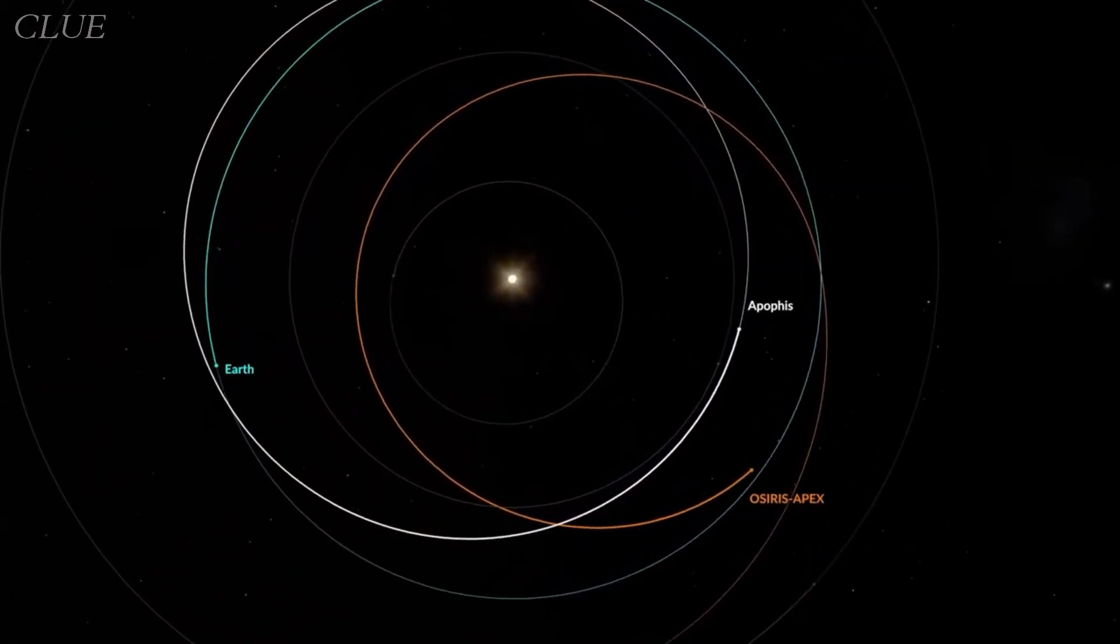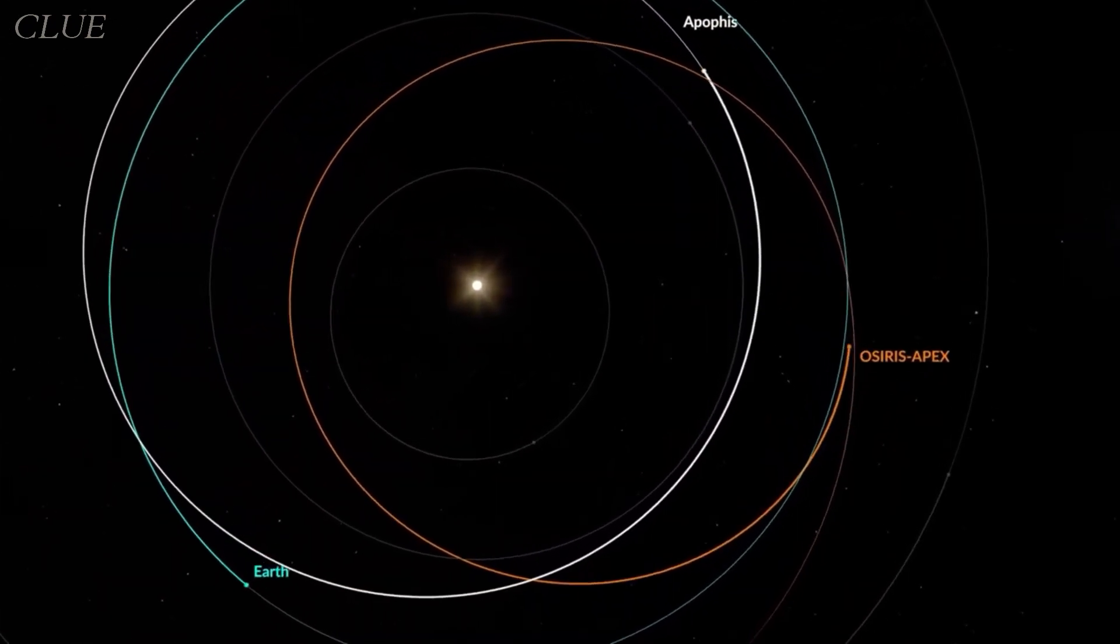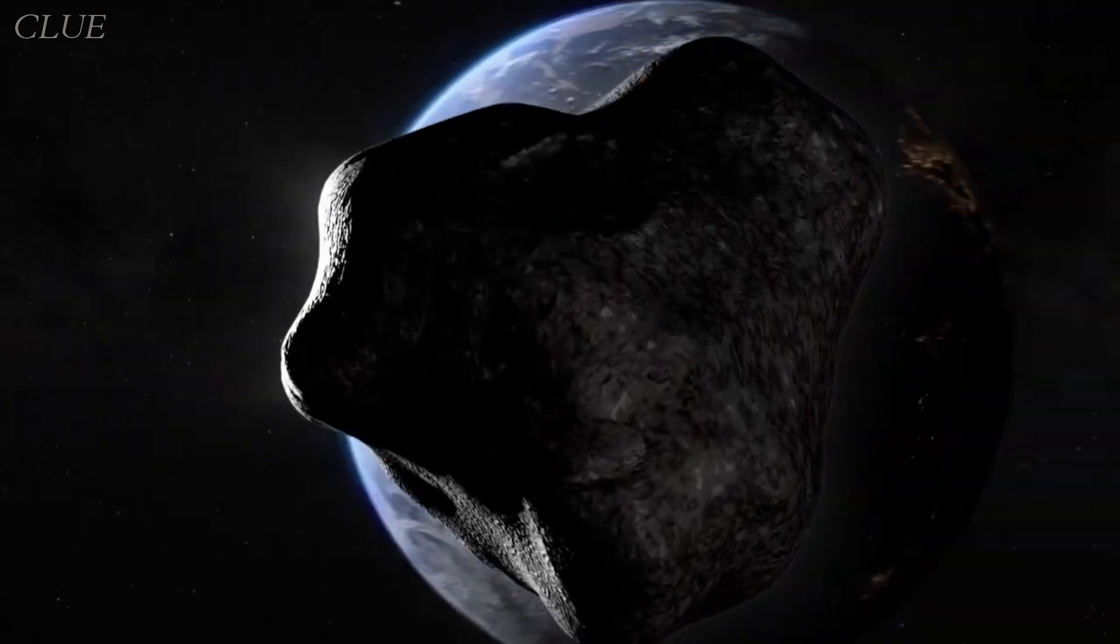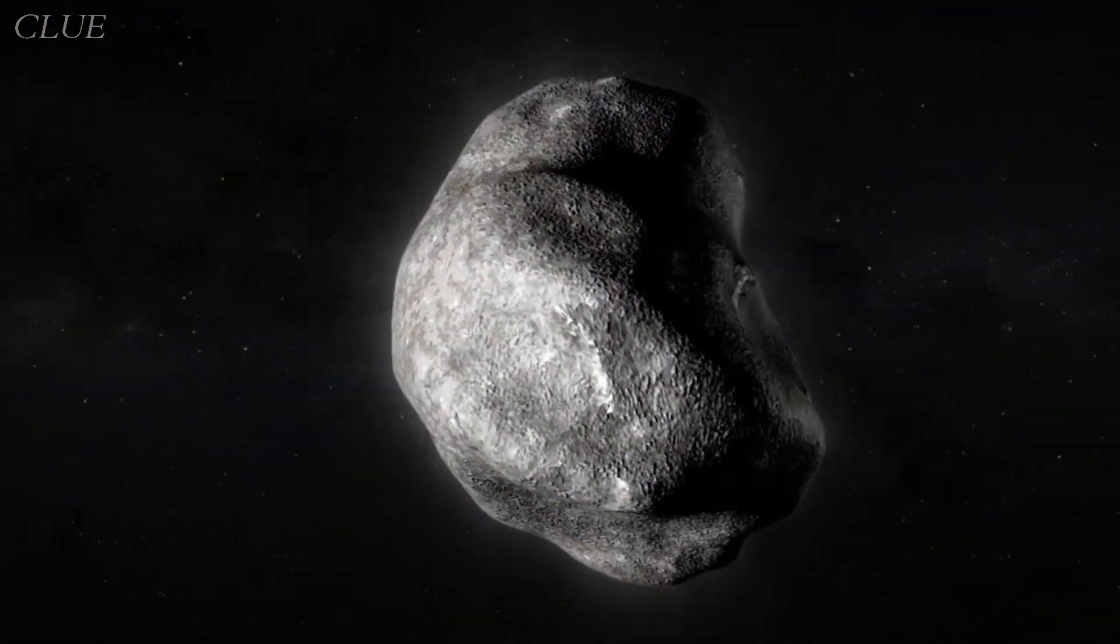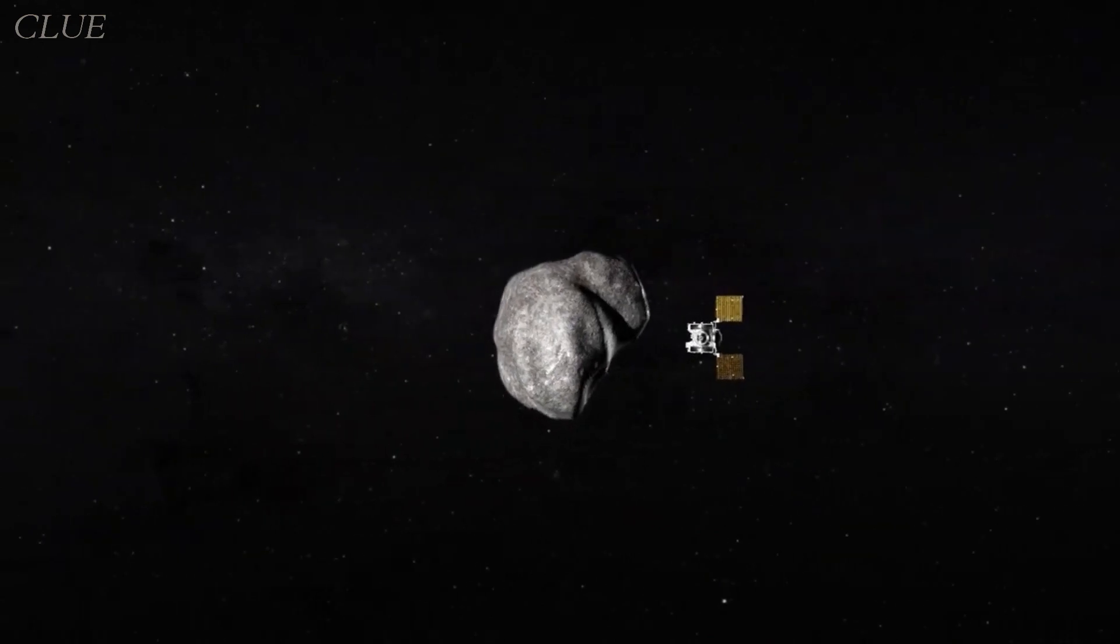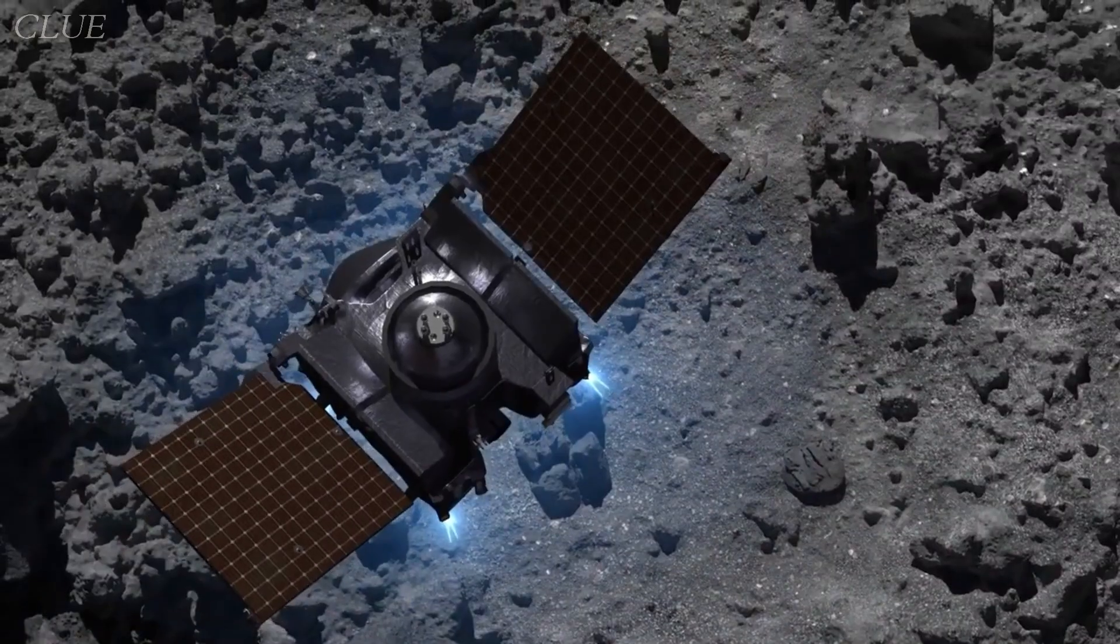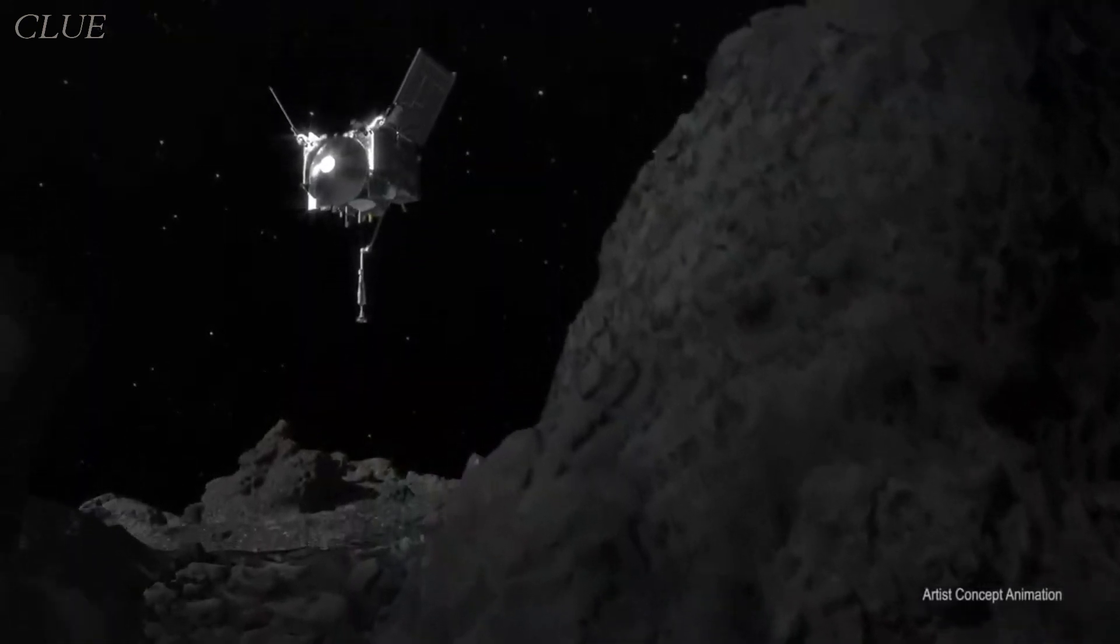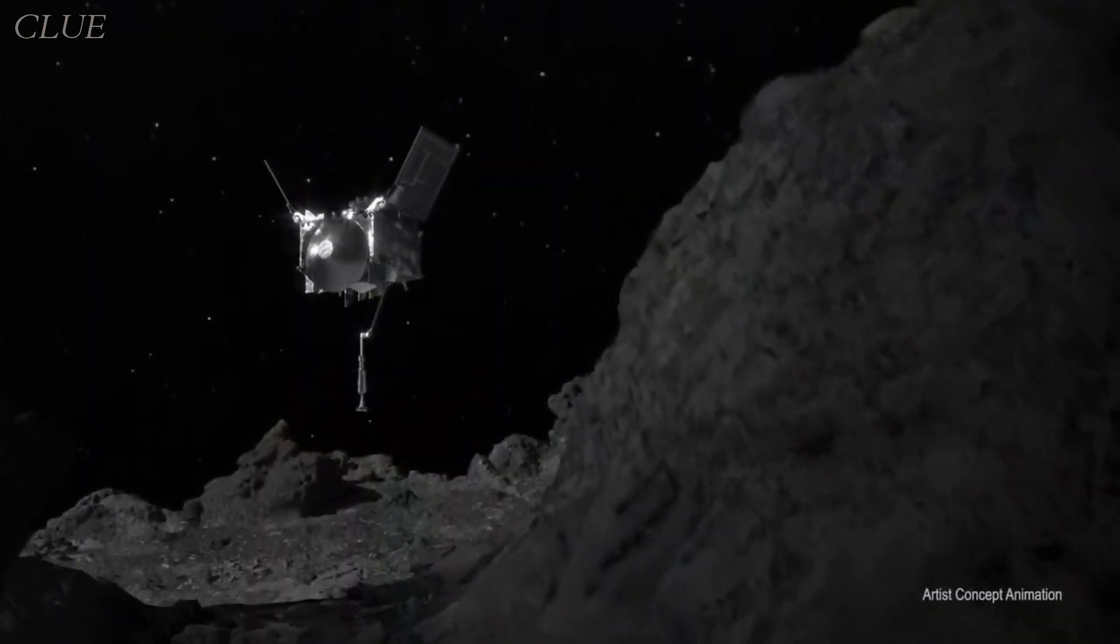And as the name implies, OSIRIS-APEX's next cosmic stop is the near-Earth asteroid 99942, Apophis. The spacecraft will reach this celestial object on April 13th, 2029. And for about 18 months, OSIRIS-APEX will settle into an orbit around Apophis, similar to its mission at Bennu, researching asteroids' cosmic mysteries.